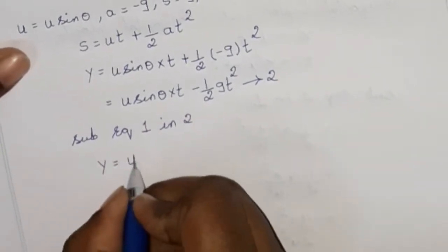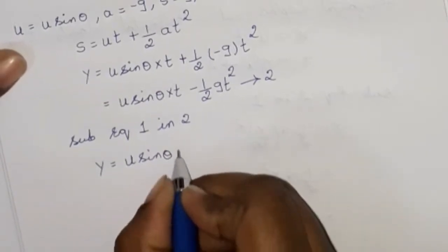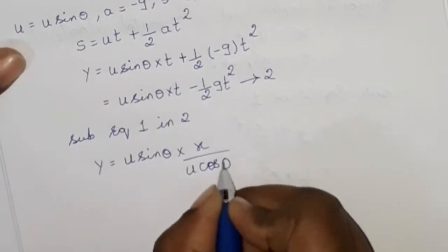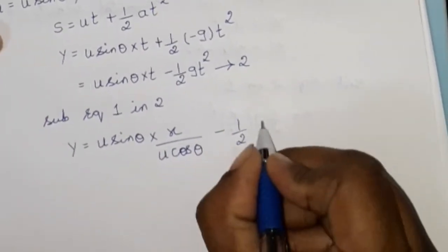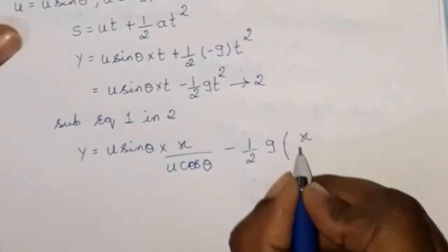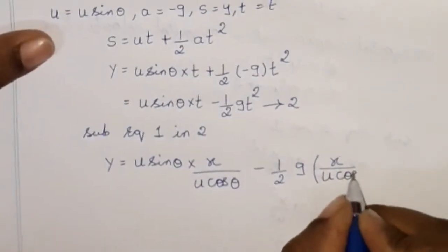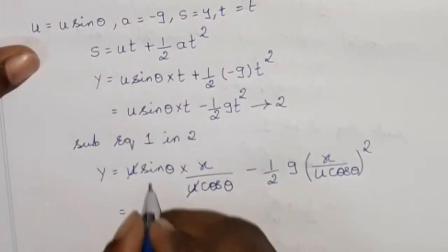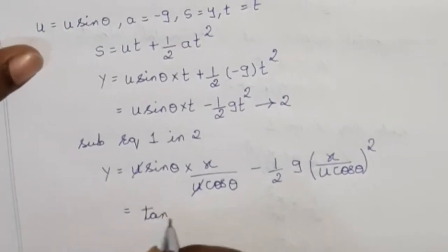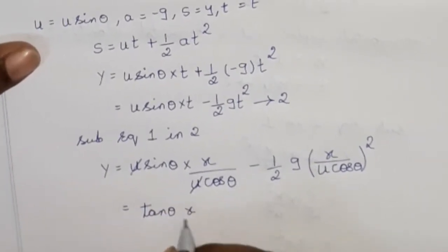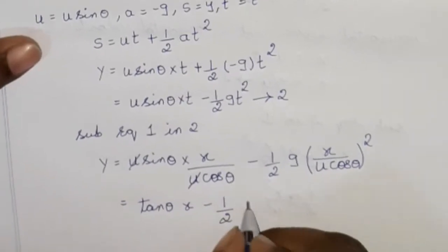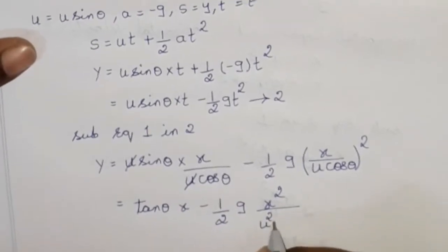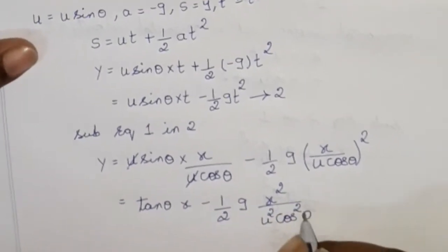Substituting t = x/(u·cosθ): y equals u·sinθ into x/(u·cosθ) minus ½g into (x/(u·cosθ))². The u terms cancel. Sinθ/cosθ is tan θ, so y equals x·tanθ minus g·x²/(2u²cos²θ).